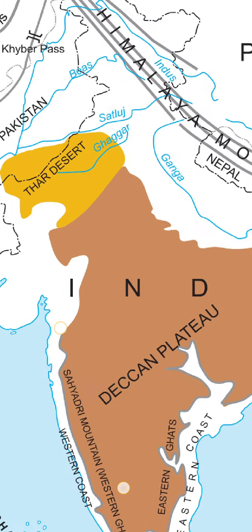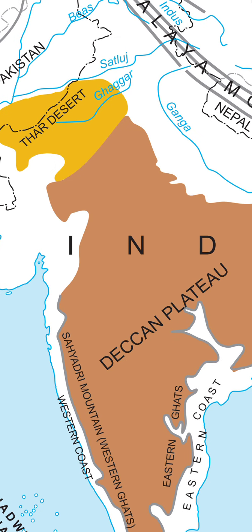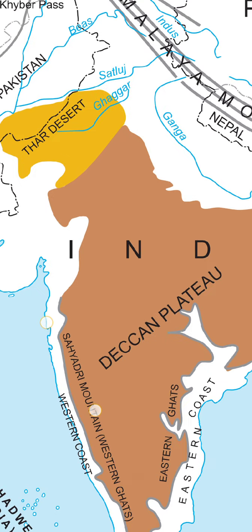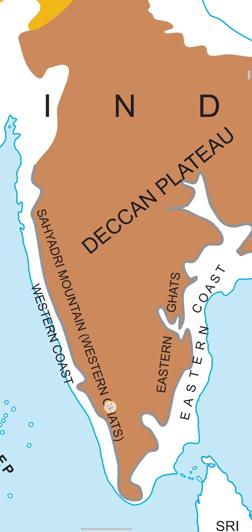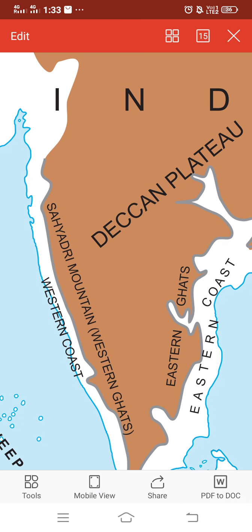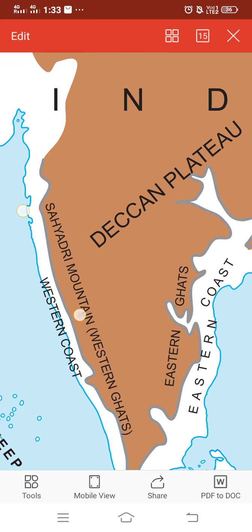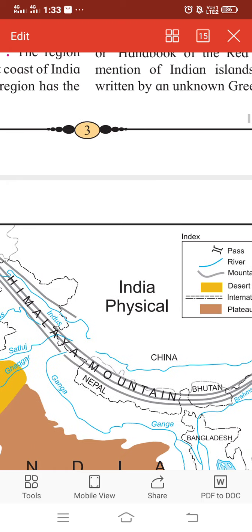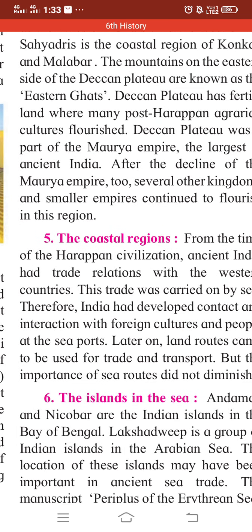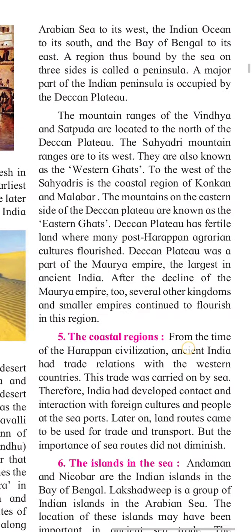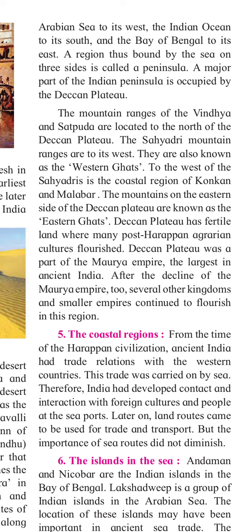On the western coast, the upper portion — especially the Mumbai region — is called the Konkan region. Below the Konkan region, covering parts of Kerala and Karnataka, is called the Malabar region. After the decline of the Maurya Empire, several smaller kingdoms flourished in this region.